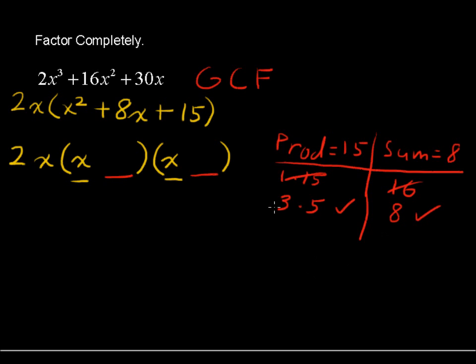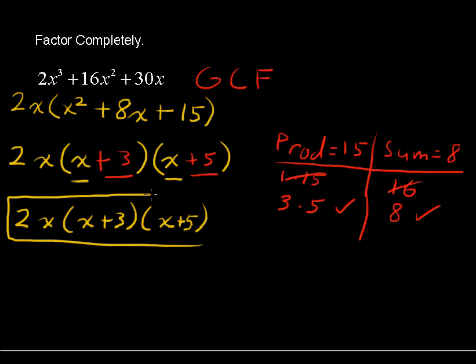So our two numbers are positive 3 and positive 5. Let's write that in there, plus 3 and plus 5. And, just to make a clean final answer, I'm just going to write this one more time. 2x times the quantity x plus 3 times the quantity x plus 5. And, that is your factored version, or factored form, of the original polynomial.